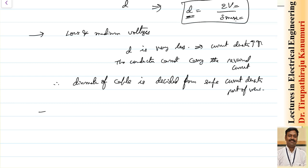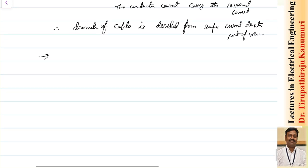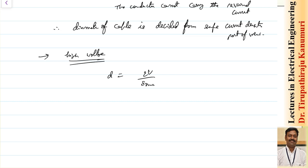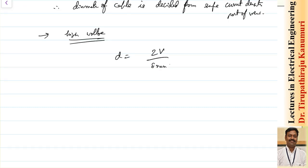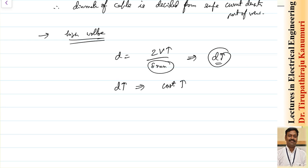For high voltage cables, as voltage increases, d = 2V/g_max gives a larger diameter than what is needed for current-carrying capacity. This excess size increases conductor cost and cable weight. To address this, different techniques are used.